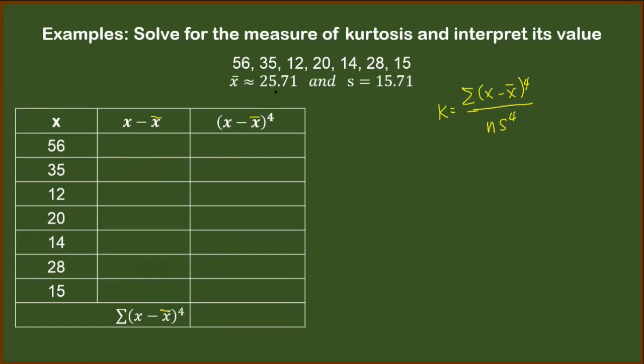We have 56 minus 25.71. That will result to 30.29. Then that value will be raised to the 4th power, which will give us 841,777.07.